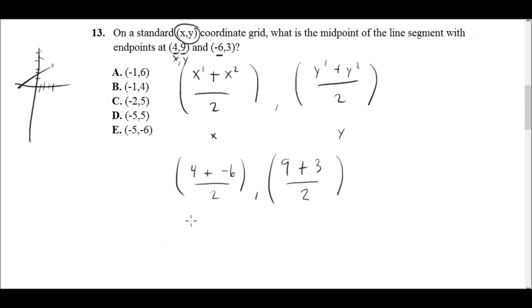Alright, so then down here, let's just see what we get. So 4 plus negative 6 is negative 2, that's over 2, comma. And then 9 plus 3 is 12, over 2. Alright, and that's ultimately going to give us negative 1, right? Because negative 2 divided by 2 is negative 1. And then 12 divided by 2 is 6. So the answer is A.